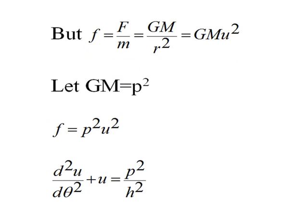The attractive force between the sun and the planet equals G times M times m over r squared, where capital M is the mass of the sun and simple m is the mass of the planet. The force per unit mass, simple f, equals G times M times u squared. Since G times M is a constant, let's set G times M equal to p squared, so simple f equals p squared u squared. Substituting this into the differential equation, we get d²u/dθ² plus u equals p² over h².